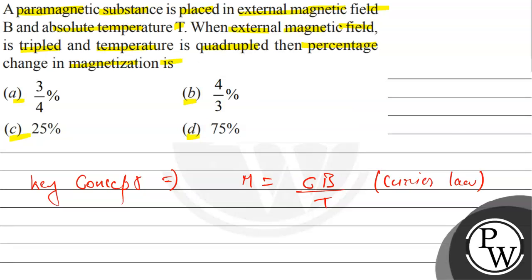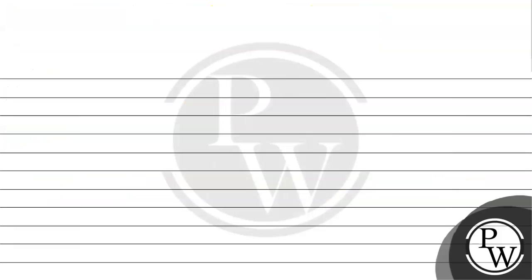Now, first condition: a paramagnetic substance with external magnetic field B and absolute temperature T. So by Curie's law, it will be M1 = CB1/T1.